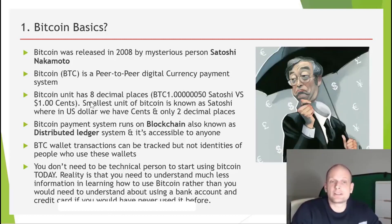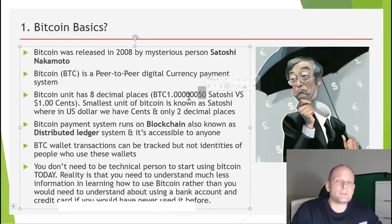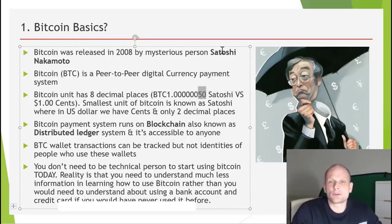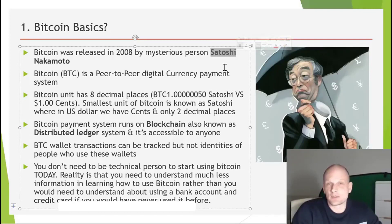Bitcoin units have 8 decimal places. As you can see here, we have 1 Bitcoin and 50 Satoshis. Satoshi is the name for the smallest Bitcoin unit — just like in dollars we have cents, in Bitcoin we have Satoshis. The name is derived from Satoshi Nakamoto.